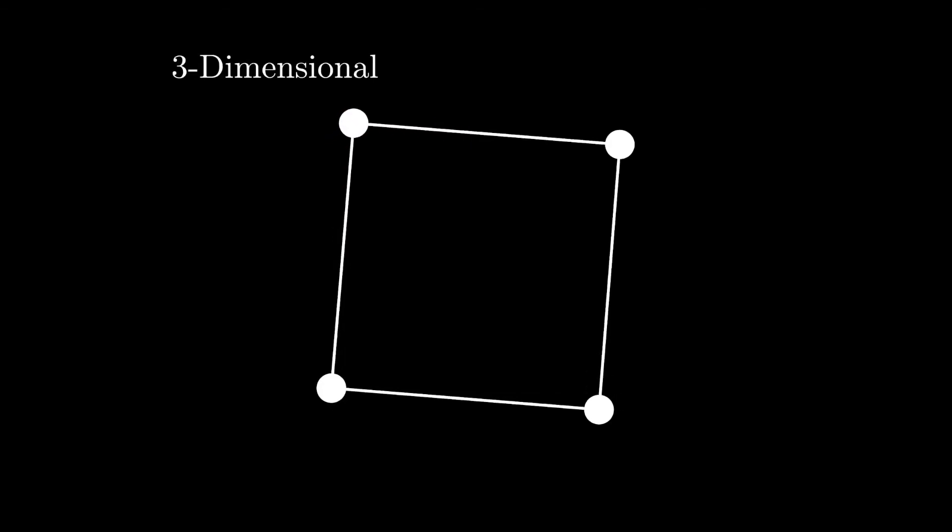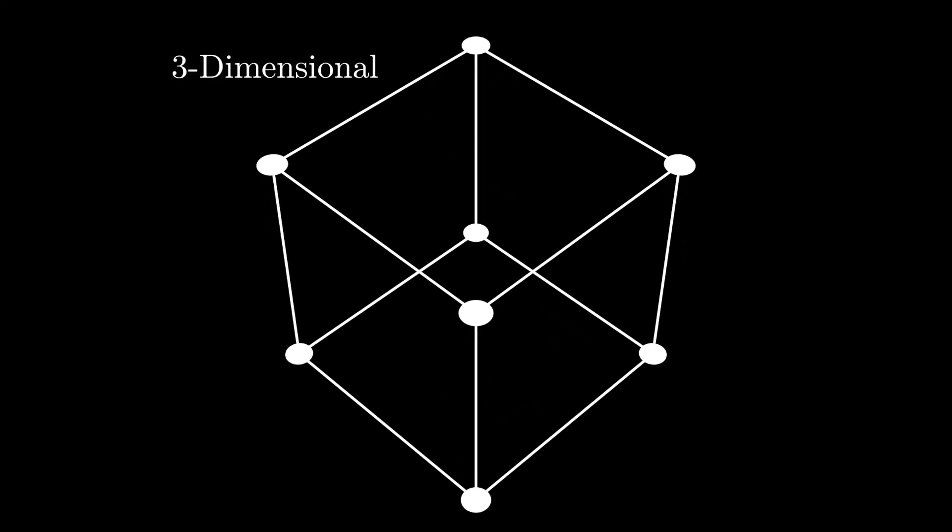Now to transfer to the third dimension we're going to again duplicate our two dimensional object and connect the corresponding vertices. We now have at each point exactly three directions in which we can travel.